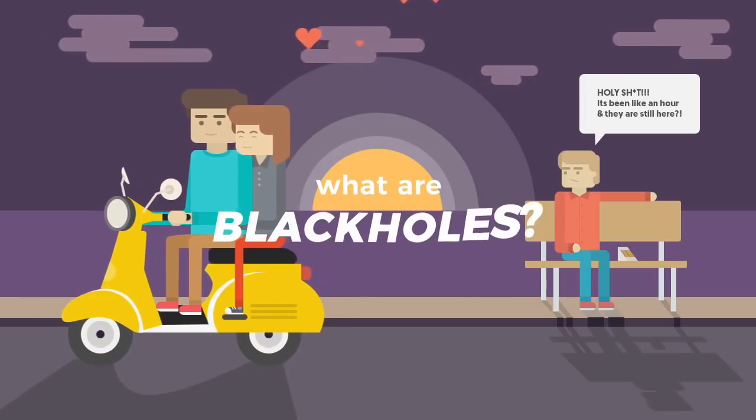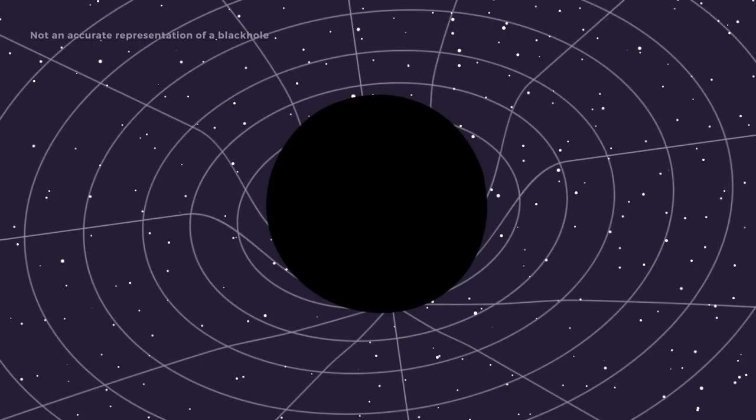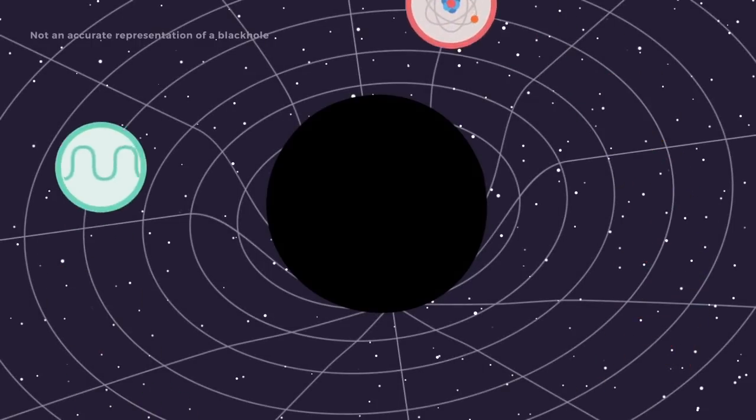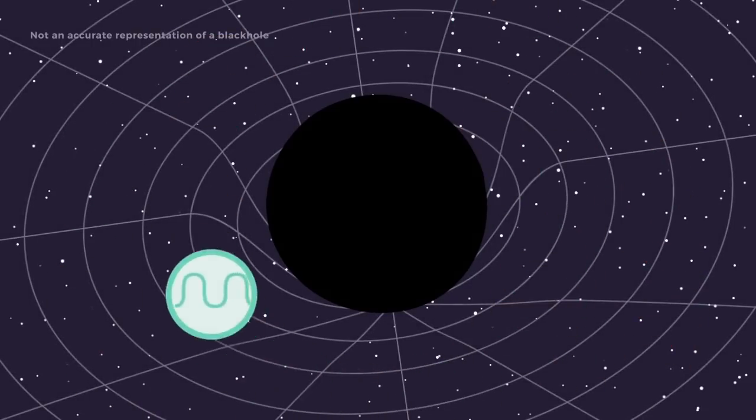But what are black holes, and how did they get here? A black hole is a region in space with a gravitational field so strong that no matter or even radiation can escape.